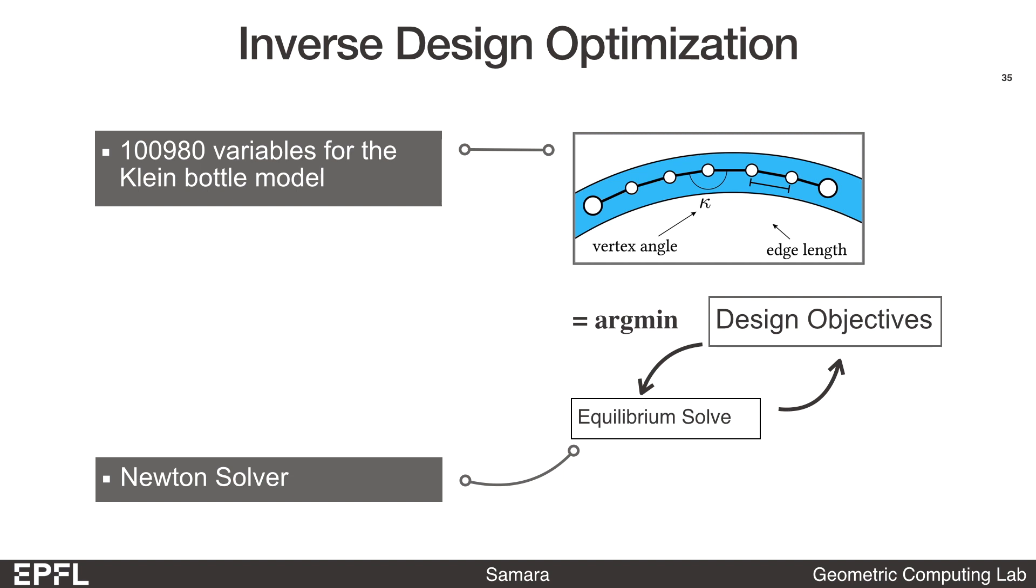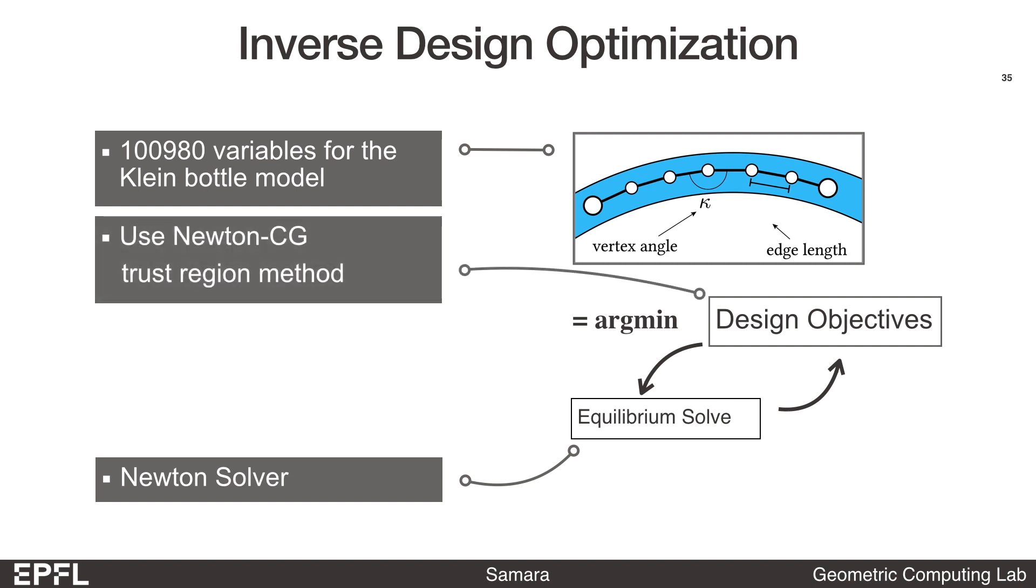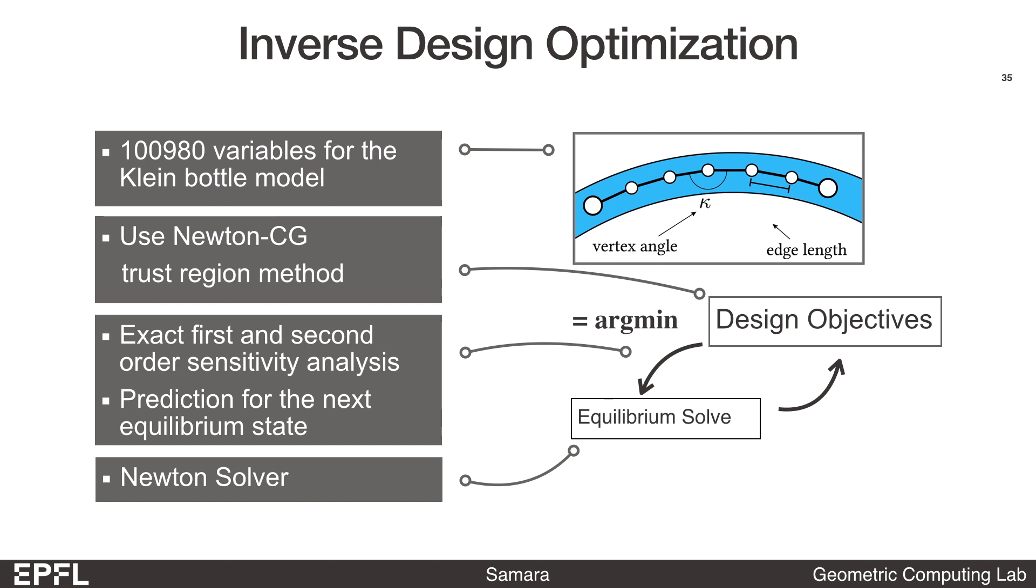We computed explicit gradient and Hessian formulas for the equilibrium problem and applied a Newton solver so that this inner loop converges rapidly. On the other hand, the full Hessian of the design problem is intractable to compute, especially since we already need the gradients of the elastic energy in the objective function of the contact term. So we choose to use a Newton-CG optimization algorithm combined with the trust region method for solving the design problem. We perform exact first and second order sensitivity analysis to obtain the Hessian vector product information needed for Newton-CG. Additionally, we speed up the equilibrium solve by finding a good initial guess from the projected Taylor expansion of the previous equilibrium states.